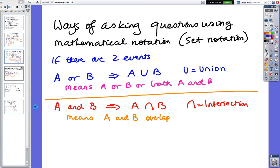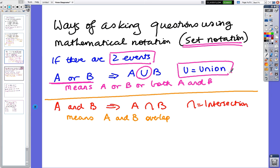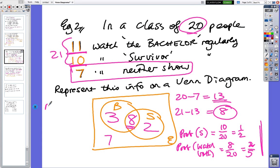There's ways of asking questions using mathematical notation. So this notation is called set notation. I'm just looking at two events because we could have more, but let's say it's only two events. So if I'm looking at something about A or B, we use this symbol which is a U, and that just means the union. And in English it means A or B or both. So if you go back to the previous question, if I've got A union B, it's A or B or both. So everything except those, so there'd be 13 people.